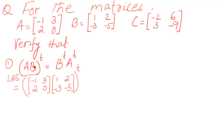A B — there is no sign between A and B, no plus, no negative — it means there is multiplication between A and B. We will start the multiplication. First of all, we have to see whether these two matrices are conformable for multiplication or not. There are two columns of the first matrix and two rows of the second matrix, so the number of columns of the first matrix equals the number of rows of the second matrix. These two matrices are conformable for multiplication.